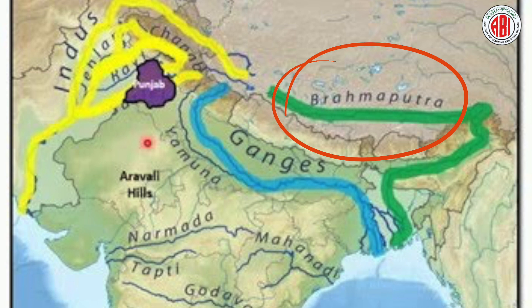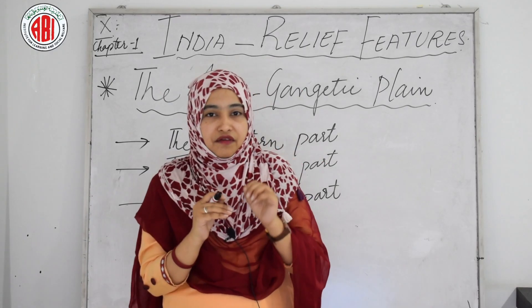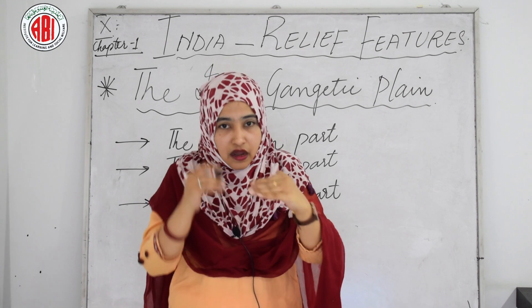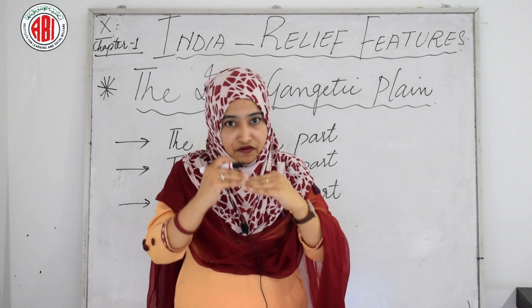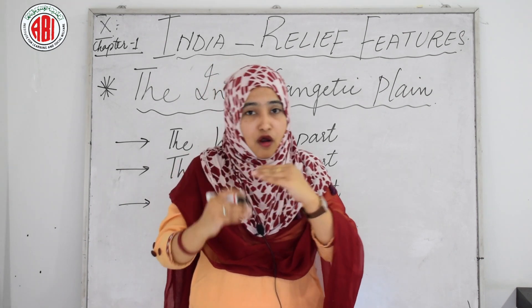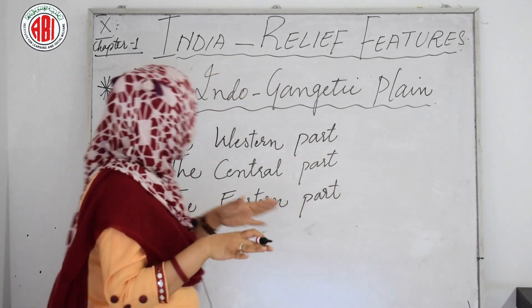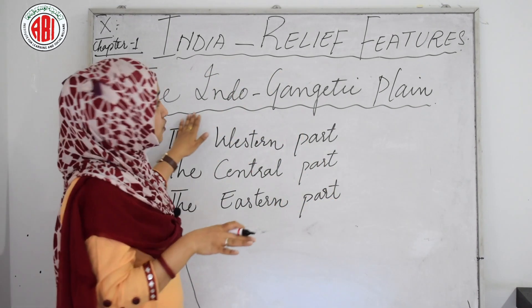The Himalayan rivers flowing down deposit gravel, pebble and sediments in a narrow belt of 8 to 16 kilometers, forming a feature parallel to the Shivalik foothills. We have already seen the greater Himalaya, lesser Himalaya and Shivalik. After the Shivalik, the area formed by these rivers is divided as the Indo-Gangetic Plains.